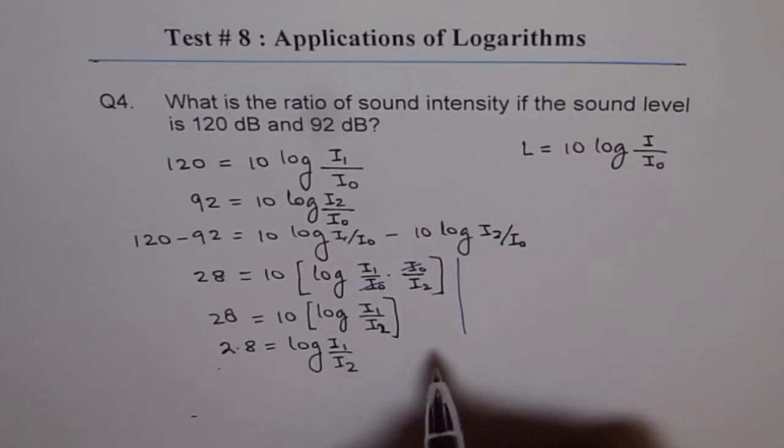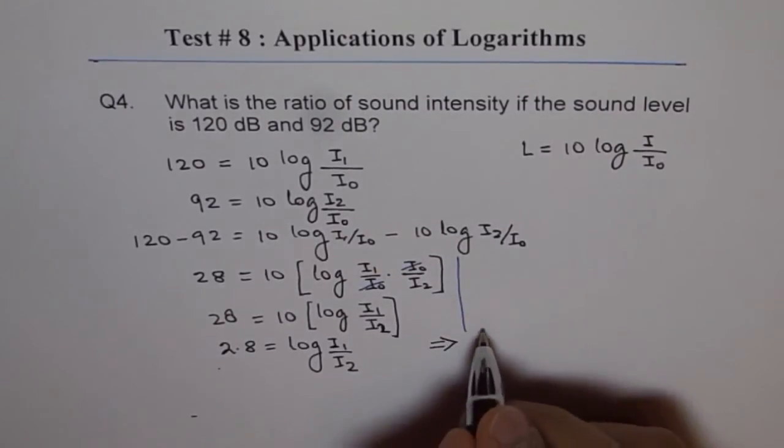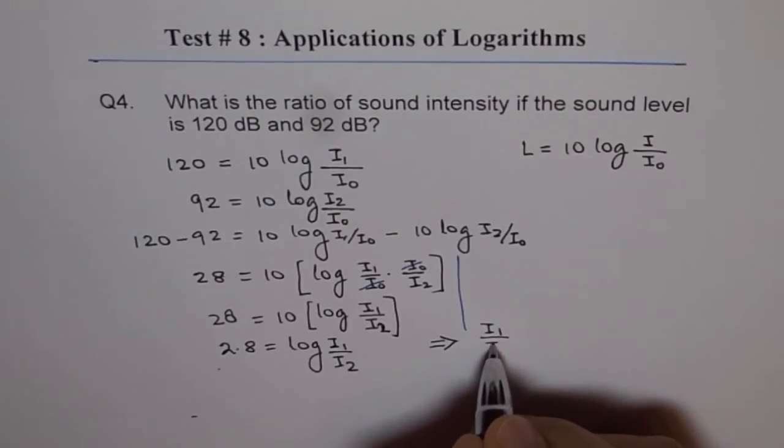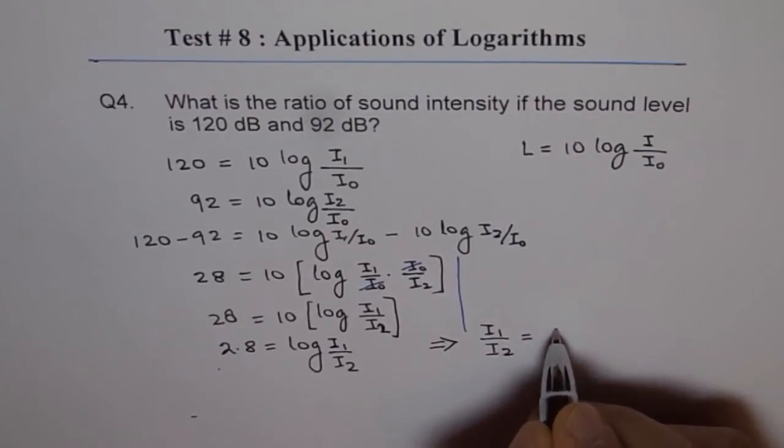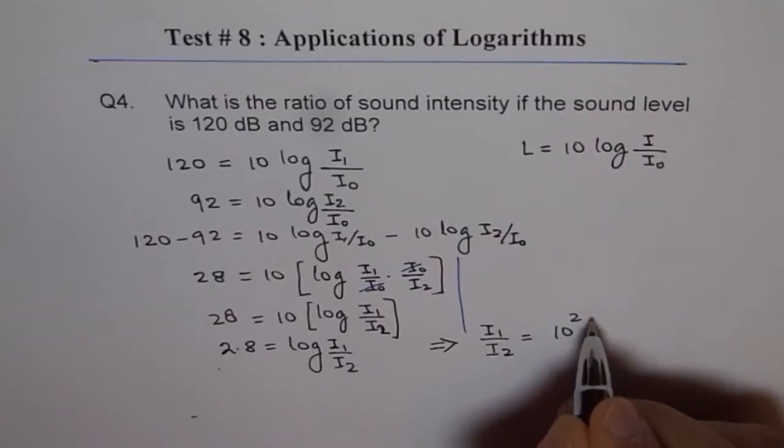This implies I1 over I2 is equal to 10 to the power of 2.8.